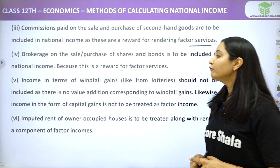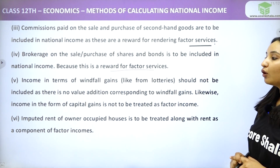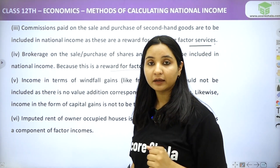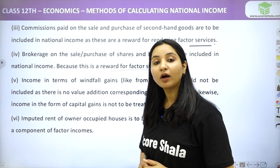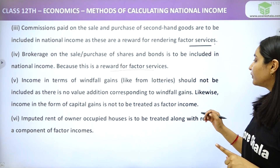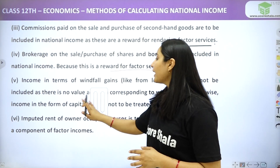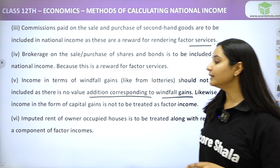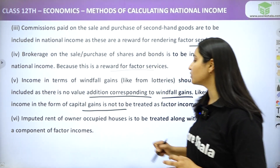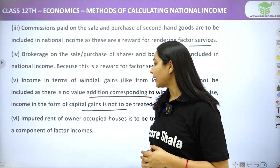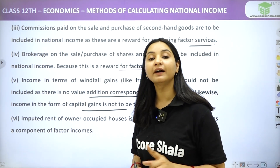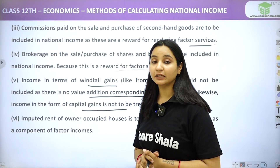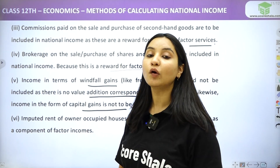Income in terms of windfall gains, like from lotteries, should not be included. Lotteries are not to be included as there is no value addition corresponding to windfall gains. Likewise, income in the form of capital gains is not to be treated as factor income, so it is not included in national income.